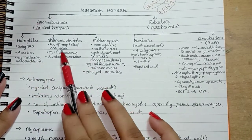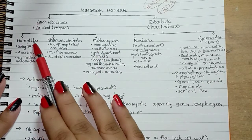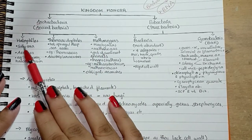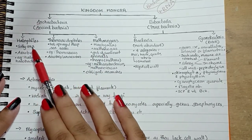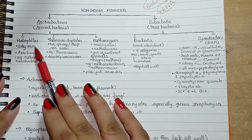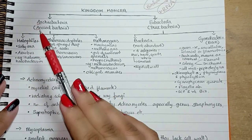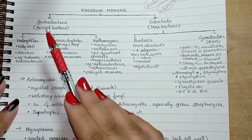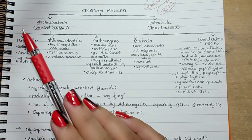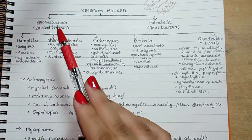Let's look at halophiles, thermoacidophiles, and methanogens. First, halophiles — they live in extremely salty areas. Halobacterium, found in the Dead Sea and Great Salt Lake, cannot live in less than three molar NaCl concentration.